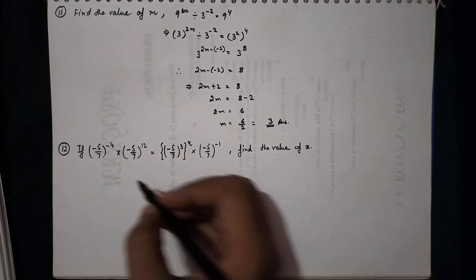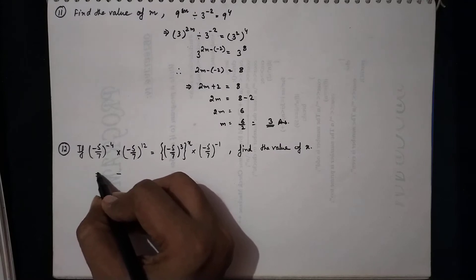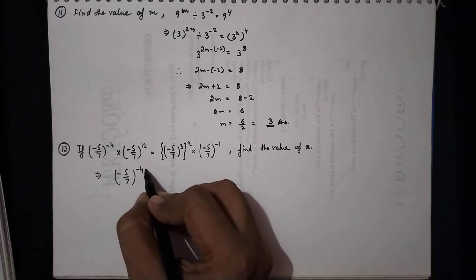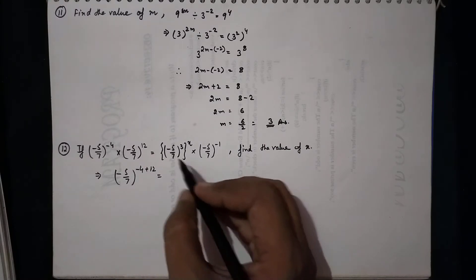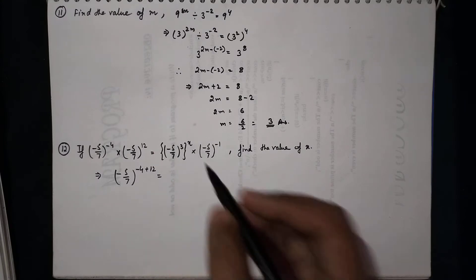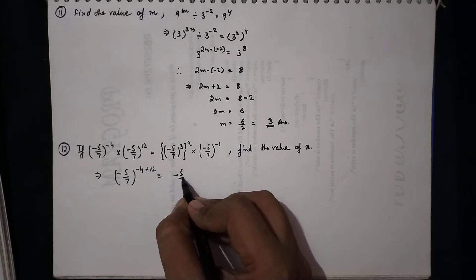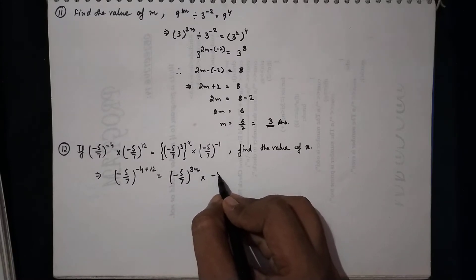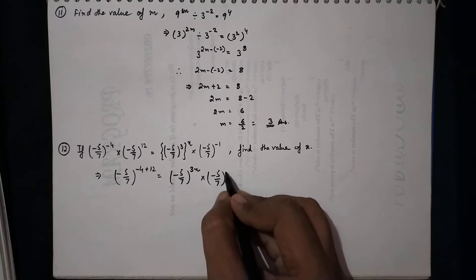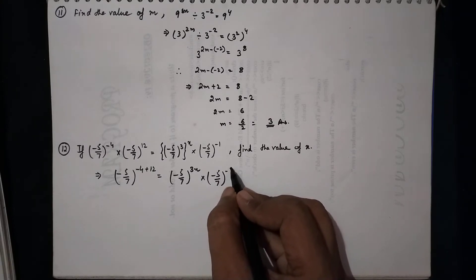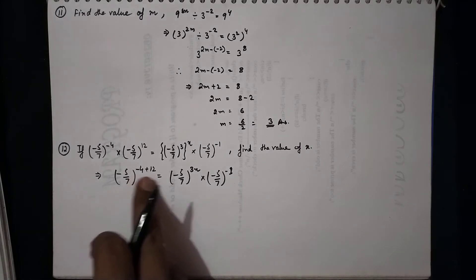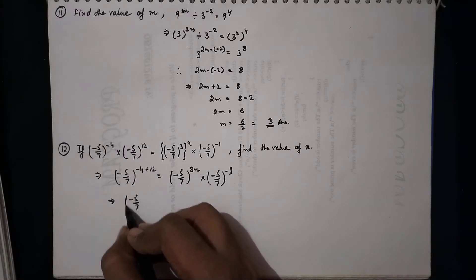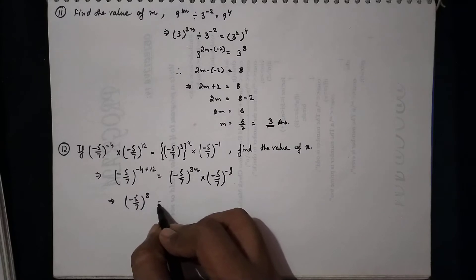So we get (−5/7)^(−4 + 12) on the left side. On the right side, the powers are multiplied first, giving (−5/7)^(3x) × (−5/7)^(−1). Adding those two powers on the right gives (−5/7)^(3x − 1).